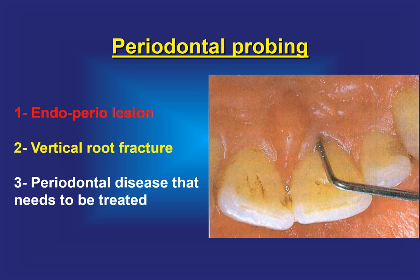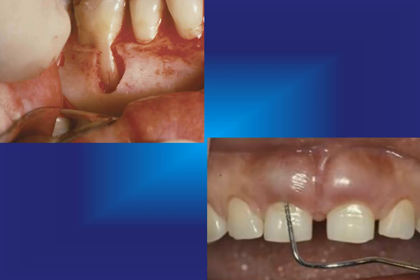Periodontal probing is very important to identify the status of the periodontal tissue. We identify endo-perio lesions, vertical root fractures, and periodontal disease that needs to be treated alongside endodontic treatment. As we can see here, there is a vertical fracture that caused severe bone loss and periodontitis.